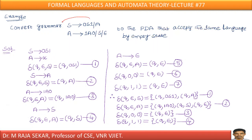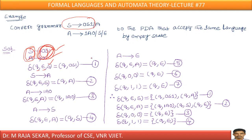Consider the first production: S goes to 0S1. According to rule 1, capital A goes to alpha, where A is S and alpha is 0S1. Therefore: delta of (Q, epsilon, S) = (Q, 0S1).